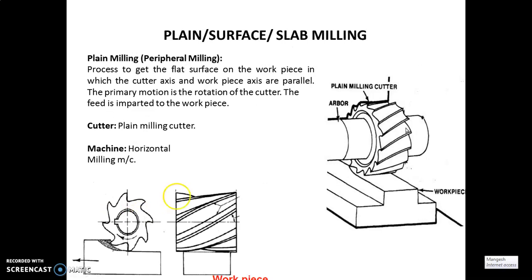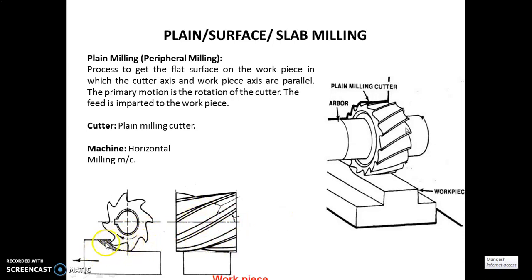Let's start with plane milling, also called peripheral milling. The cutters are cylindrical in shape and have cutting teeth on the periphery, which is why it is also called peripheral milling. They are used for milling plain or flat surfaces. A plain milling cutter may have either straight or helical teeth. The feed is imparted to the workpiece, and the surface is finished using plain slab milling on a horizontal milling machine.